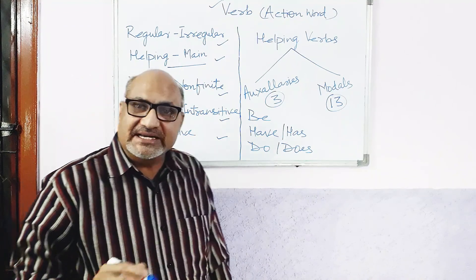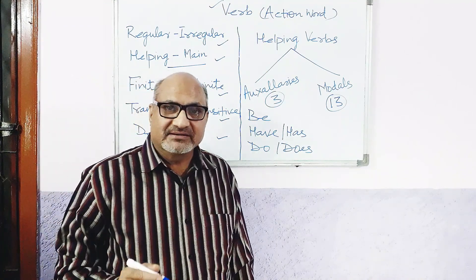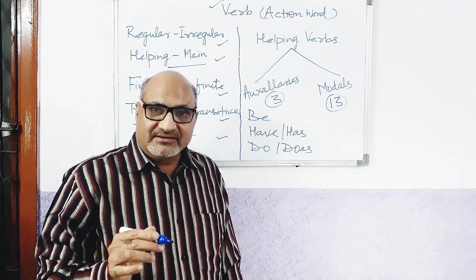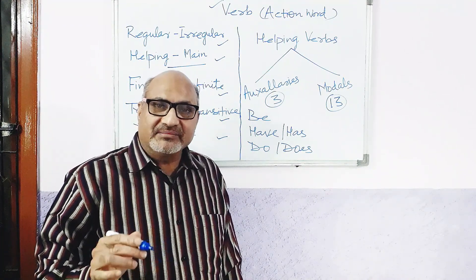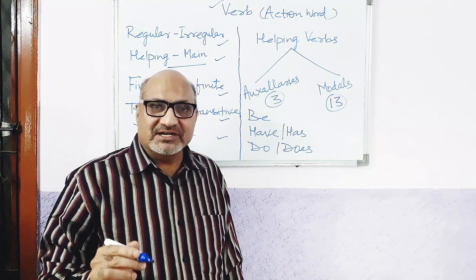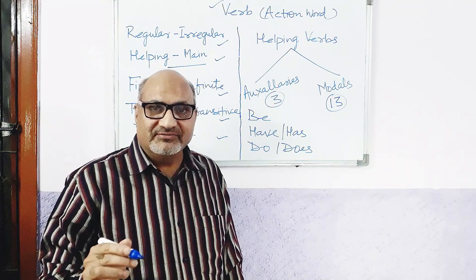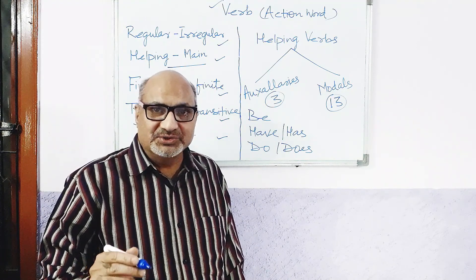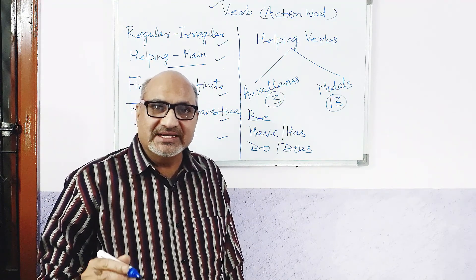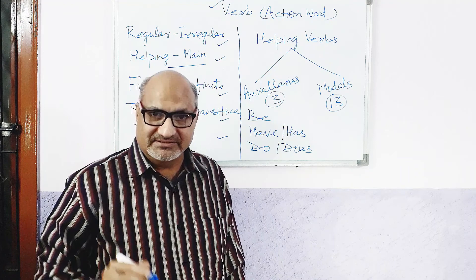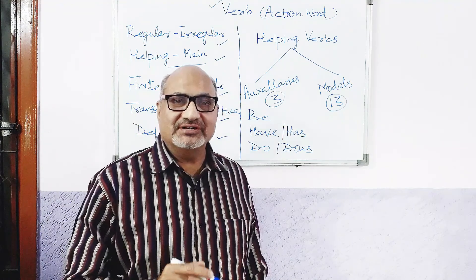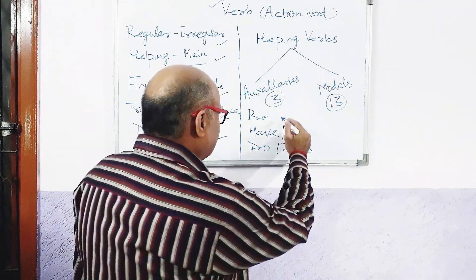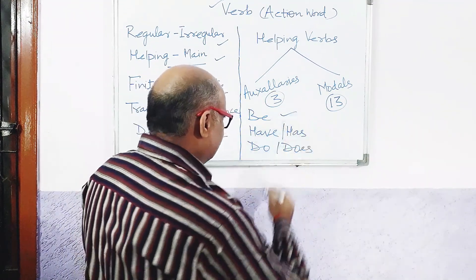And modals are 13. They are: can, could, may, might, shall, should, will, would, must, ought to, used to, need, and dare. Today we are going to deal with this one: 'be', the auxiliary verb.